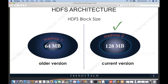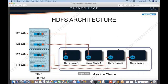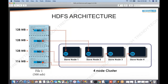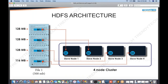A file is divided into blocks where each block is 128 MB. In our 500 MB example, the first block is 128 MB, the second is 128 MB, the third is 128 MB, and the fourth is 116 MB. The remaining 12 MB is not wasted — it is freed up. So the space is released, not wasted.